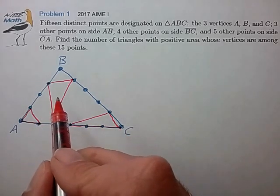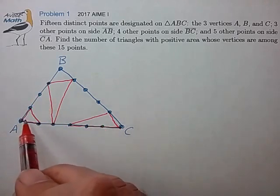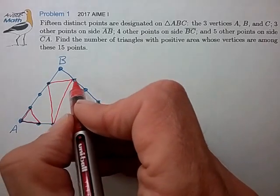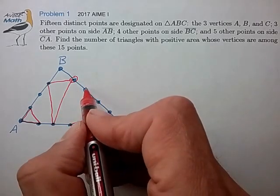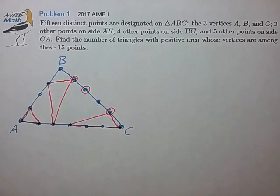So, it looks like just about any selection of three distinct points is going to form a valid positive area triangle unless the three points are selected on the same side of one of the sides of this triangle.